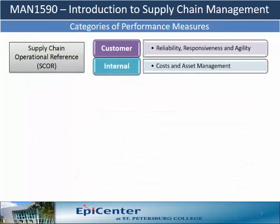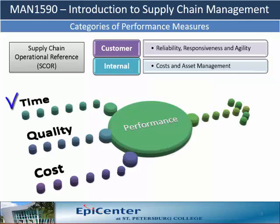We saw in chapter 8 how supply chain performance measures as defined by SCOR can be grouped into two categories: customer-centric and internal-focused. We can further categorize process performance measures in terms of time, quality, cost, and other supporting measures.